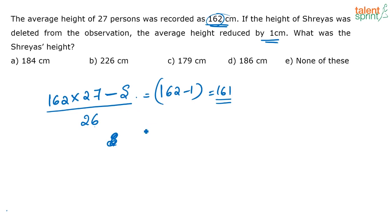This takes a bit of time. When such a question comes, if you know the concept of equal distribution, solving this question will be far easier. You would have to do S = 161 × 26, then 162 × 27 minus that value. You will still get the correct answer, which is actually 188, but it is more time consuming.